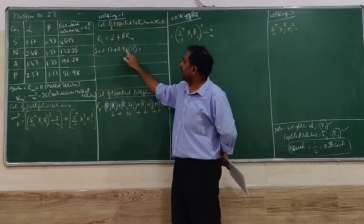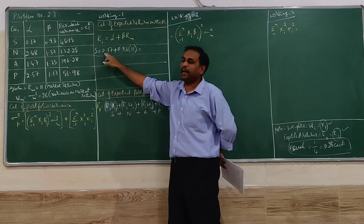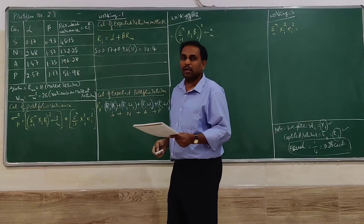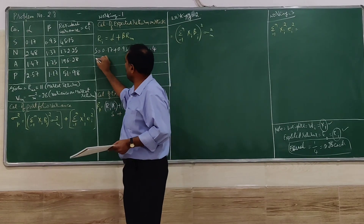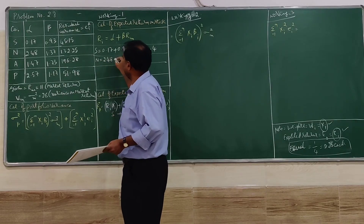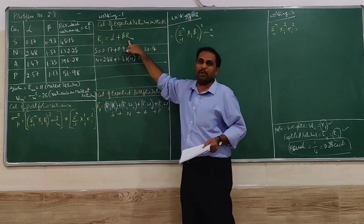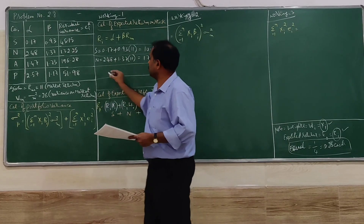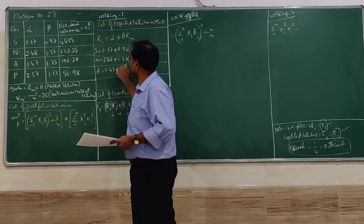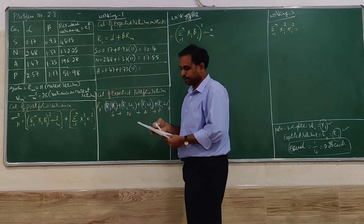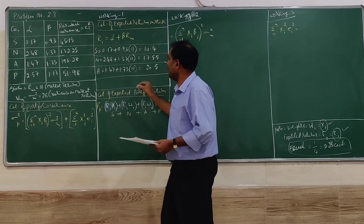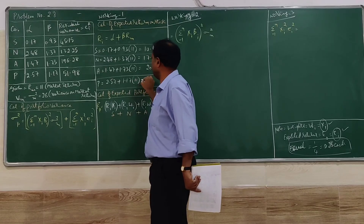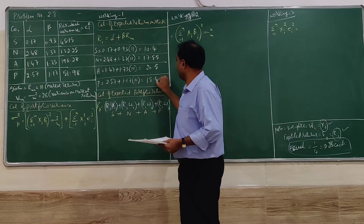For company S: alpha is 0.17, beta is 1.93, so RI = 0.17 + 1.93 × 11 = 10.4. For Neptune: 2.48 + 1.37 × 11 = 17.55. For Asteroid: 1.47 + 1.73 × 11 = 20.5. For Planet: 2.57 + 1.17 × 11 = 15.44. So individually we have got RI for each company.